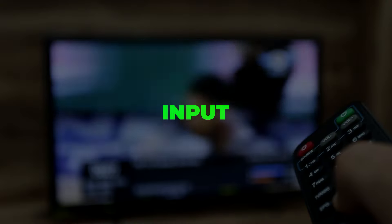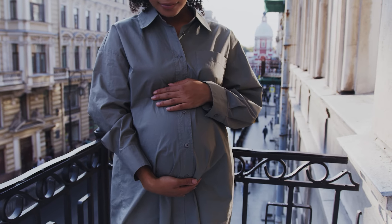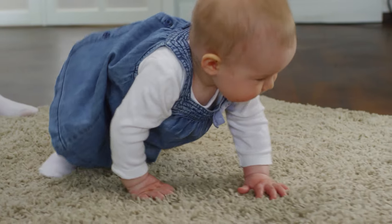So how do you do it? The principle is actually very simple: input. You need a lot of input, and you need to understand it. That's how you acquired your first language. Even before you were born, you were exposed to tons and tons of input. And as a toddler, you continued to be exposed to input, and your brain started to build a complex network of implicit knowledge.